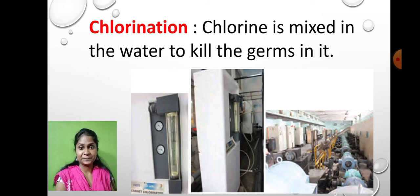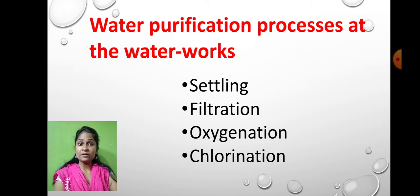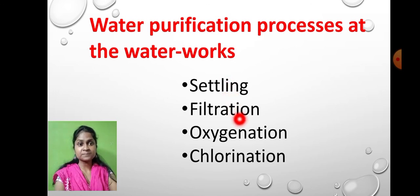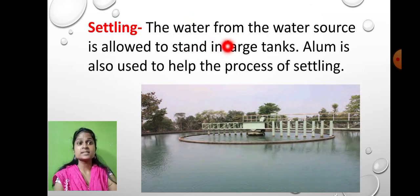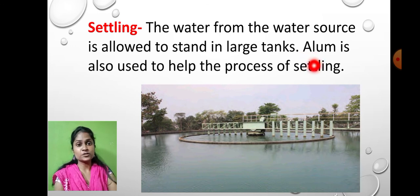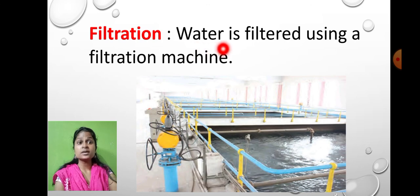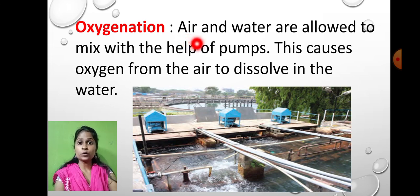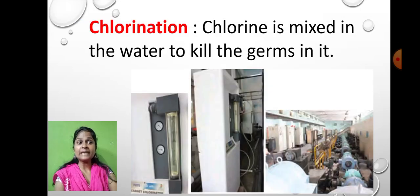To recap: water purification at the commercial level involves four steps. First, settling — water is allowed to stand in a large tank and alum is sometimes used. Second, filtration — water is filtered using filter machines. Third, oxygenation — air and water are mixed using a pump to increase the oxygen level. Fourth, chlorination — chlorine is added to kill germs.